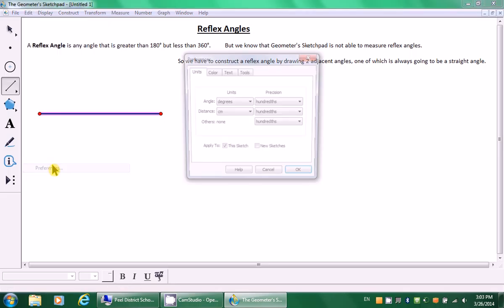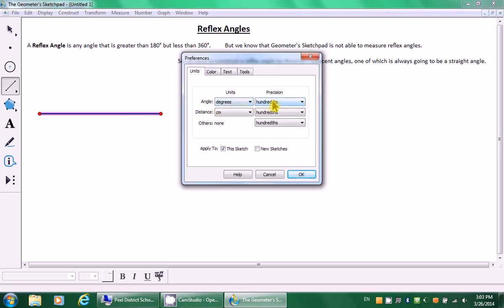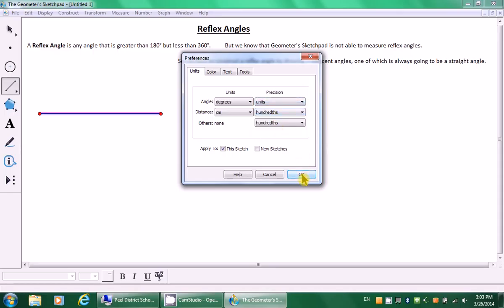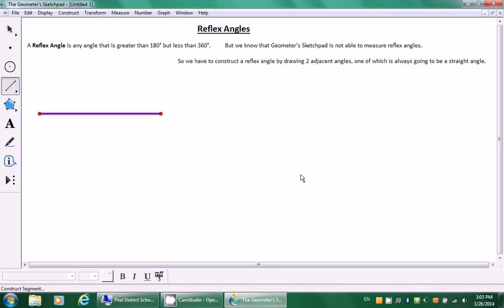So let's get started. Use the line segment tool and holding the shift key, draw a line segment. First, let's go to Edit, Preferences and change the angle precision to units. Let's click OK. Now let's create a vertex in the middle of that straight angle, right there.